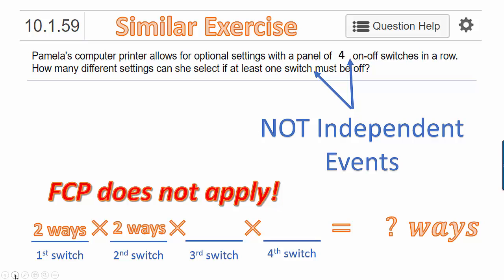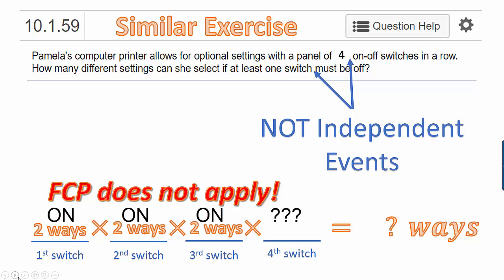How about the third switch? Regardless of what the first and second switches are — even if they were both on — the third switch could be on or off. Because if the third switch is on, we could still have the fourth switch be off. So there are two ways the third switch could be. But what about the fourth switch? At this point we run into a problem, because it's possible that the first, second, and third switches were all on. In that case, there's only one possible outcome for the fourth switch — we would have to pick off, because we need at least one off.